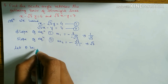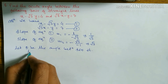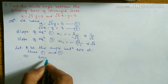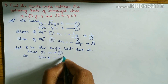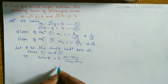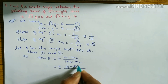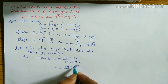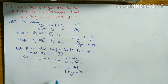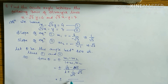Let theta be the angle between lines 1 and 2. The formula is: tan theta equals plus or minus (m1 minus m2) divided by (1 plus m1 times m2). Substituting: m1 is 1 over root 3, m2 is root 3. So the numerator is 1 over root 3 minus root 3, and the denominator is 1 plus (1 over root 3) times root 3.